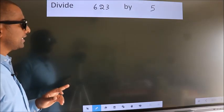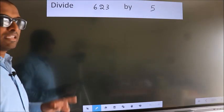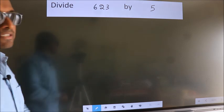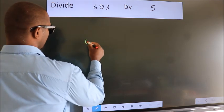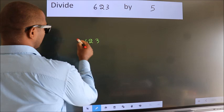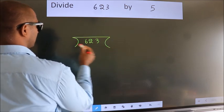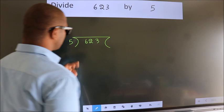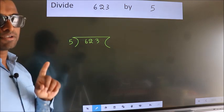Divide 623 by 5. To do this division, we should frame it in this way. 623 here, 5 here. This is your step 1.